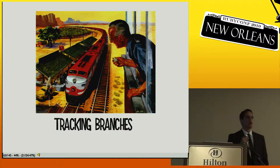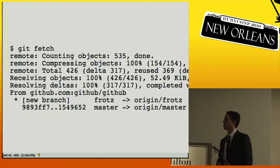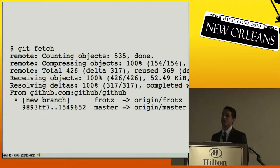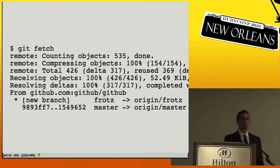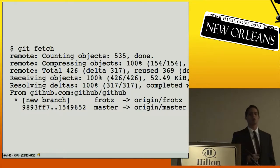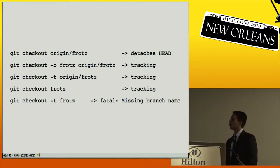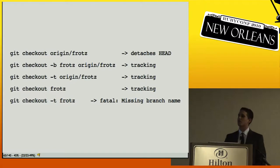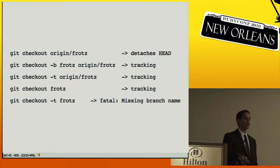Tracking branches — how many of you are confused by them? I'm confused by them too. I hate them but they're a necessary part of Git. If you fetch from a remote and get a new branch, you want to set it up as tracking so when you say `git push origin` you don't have to specify the branch name every time. Here are five common ways people try to set up tracking branches.